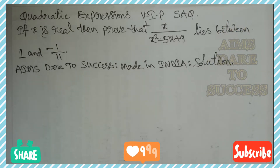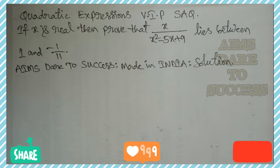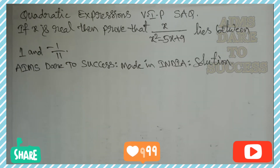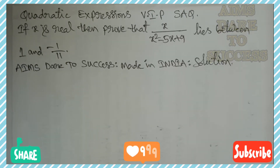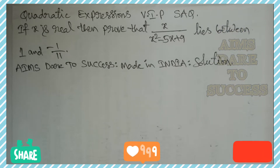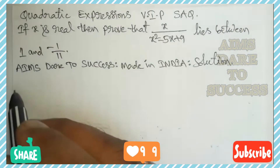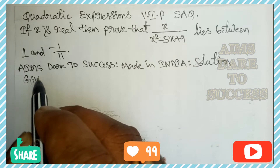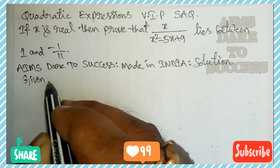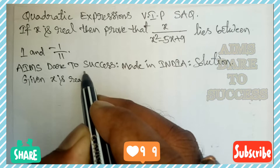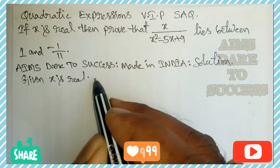The question is: if x is real, then prove that x divided by (x squared minus 5x plus 9) lies between 1 and minus 1 by 11. AIM's Dare to Success Made in India — solution. Given: x is real.